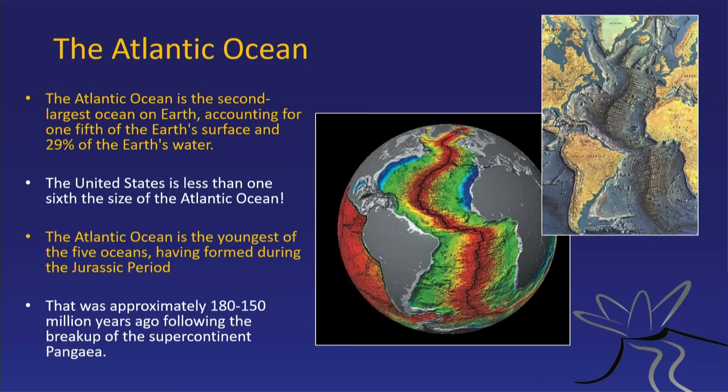The Atlantic Ocean is very young. It only formed in the Jurassic period — this is when the dinosaurs roamed — and the other oceans are all a lot older. The Jurassic was 180 to 150 million years ago; that's when the ocean started to form.